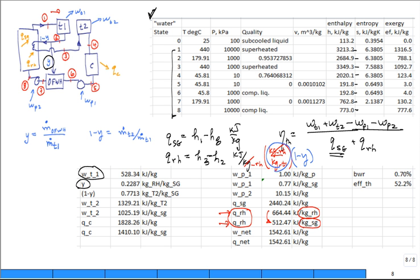And the same goes for over here for the condenser. You want the heat released out of the condenser per kilogram that goes into the first turbine stage, not per kilogram that goes through the condenser. You just multiply by one minus Y.